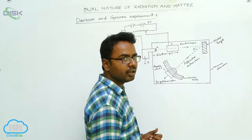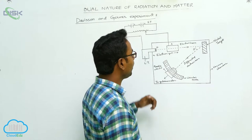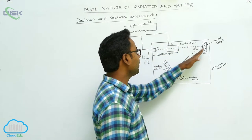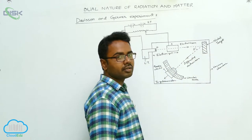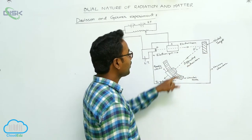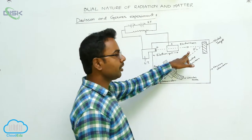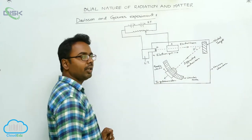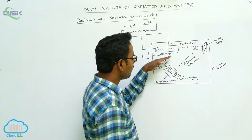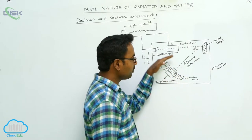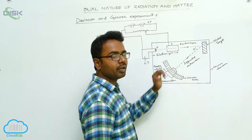This experiment is repeated for different scattering angles of the electron beam. Here, theta is the scattering angle — it is the angle between the incident electron beam and the diffracted electron beam. The electron beam is diffracted from the crystal layers of the nickel target. For different angles of scattering, we measure the intensity using the galvanometer by moving it around the circular scale.